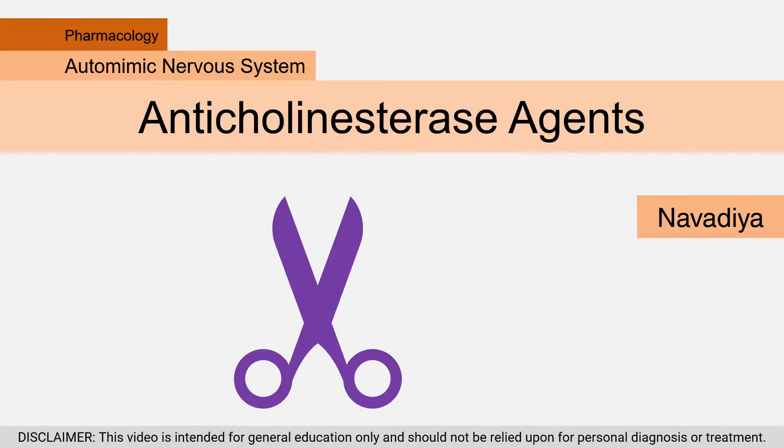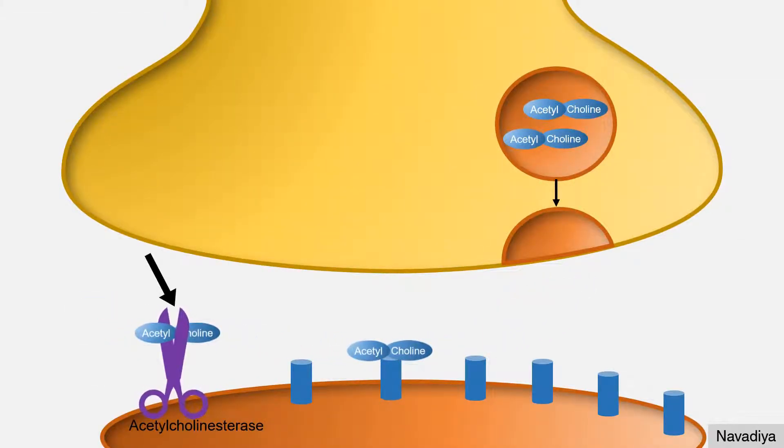Hey guys, in this video we will see mechanism of action of various anticholinesterase agents. We know that cholinesterase hydrolyzes acetylcholine present in synaptic space and terminates its action.